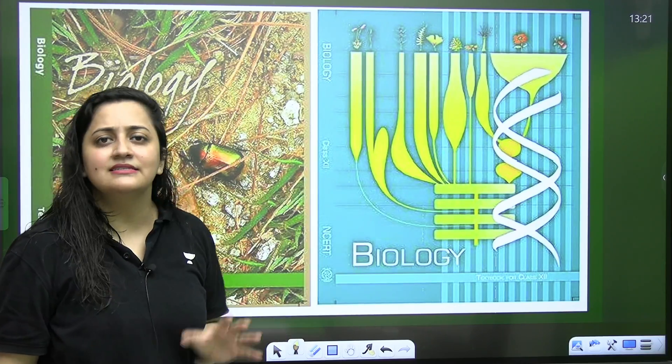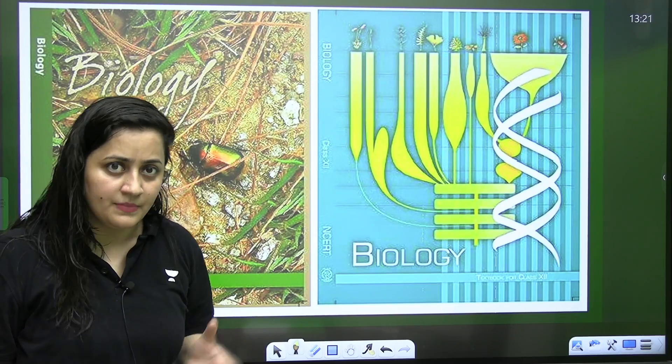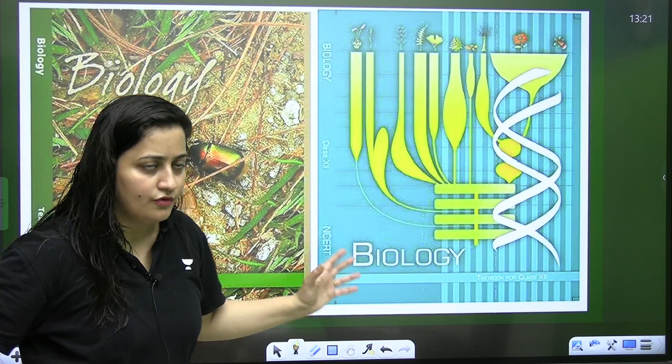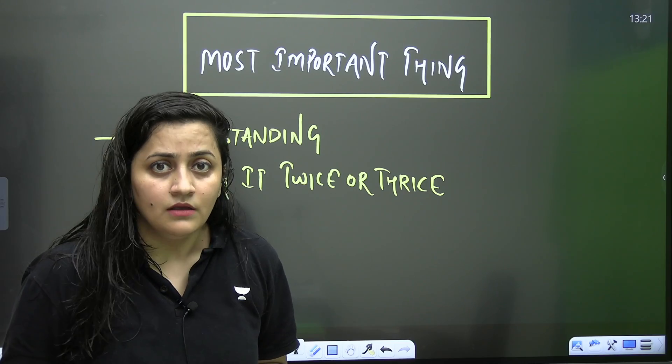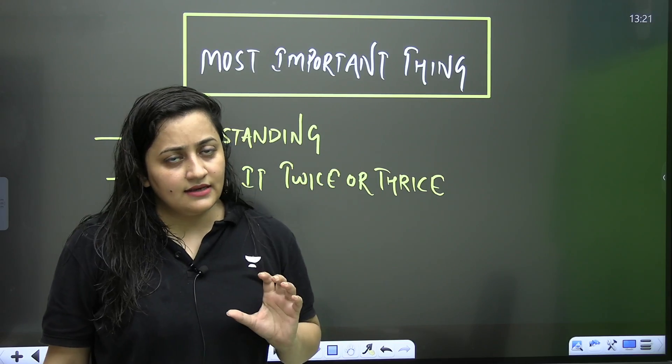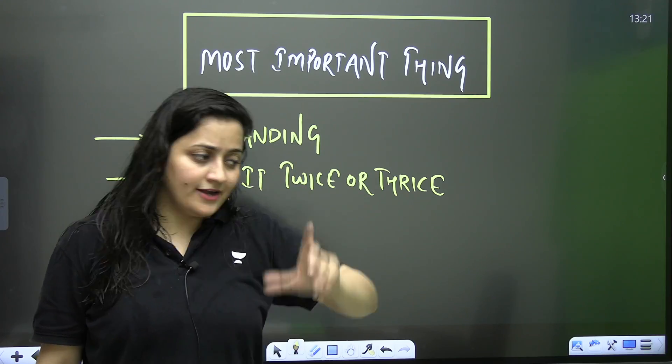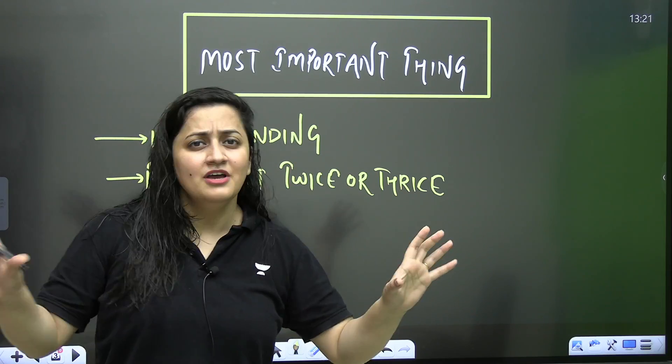First of all, we know that it is the NCRT from where the paper is going to come and as of now we have to go for the old NCRT. But what exactly we need to do in this NCRT? We have to read the NCRT thoroughly. We have to read each and every point.